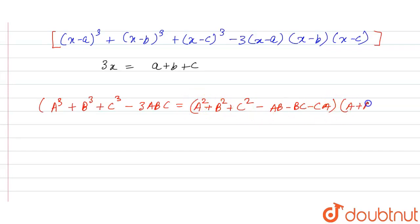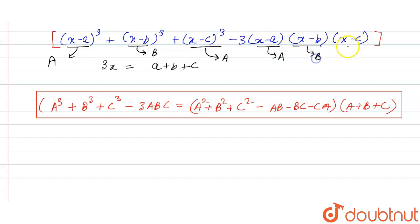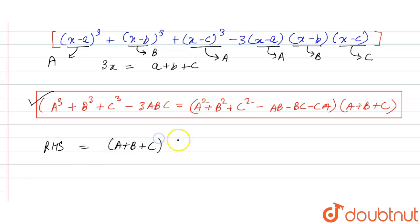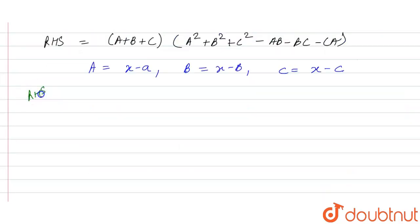In our expression, A corresponds to (x minus a), B corresponds to (x minus b), and C corresponds to (x minus c), and the last term is 3 times A times B times C. So the right-hand side of this identity becomes (A + B + C) into (A² + B² + C² minus AB minus BC minus CA), where A = x minus a, B = x minus b, and C = x minus c.